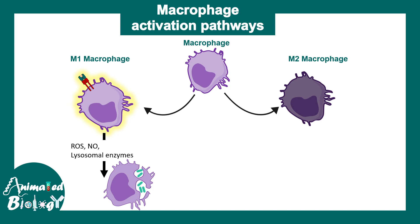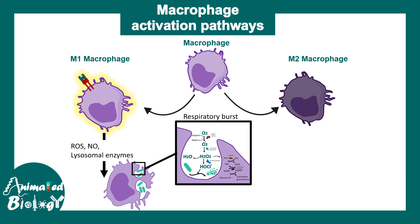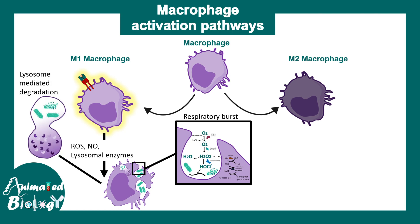The reactive macrophage engulfs the pathogen — a bacteria in this case — and undergoes a process called respiratory burst, which kills the pathogen with the help of reactive oxygen species. This strategy is used by both macrophages and neutrophils. There is also lysosomal-mediated degradation of bacteria. Moreover, M1 macrophages secrete cytokines and chemokines which attract other immune cell types to the site of infection, thereby increasing inflammation.